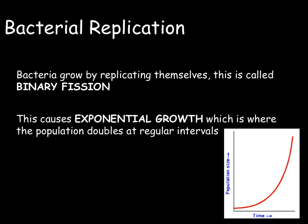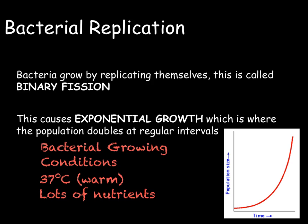Bacteria will replicate like this when conditions are right. The conditions that bacteria like are not too hot or too cold — so they're warm, about 37 degrees. Our internal body temperature is a perfect breeding ground for bacteria, as well as ensuring that there is plenty of nutrients in order for them to carry out respiration.